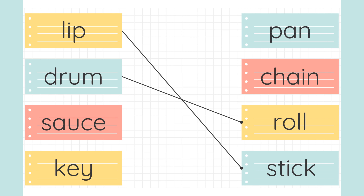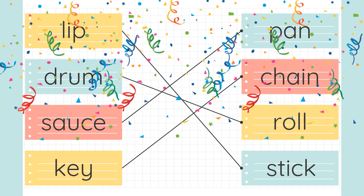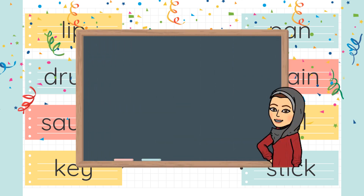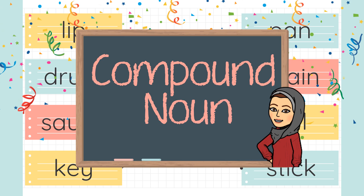Very good. Number three: sauce — saucepan. The frying pan you use to cook egg, we call it saucepan. Very good. Then key, which makes key chain. The key chain is where you hook colorful cartoons or a shape on your key. We call it key chain. Well done. Now, what do we call these? Yes, we call them compound noun.